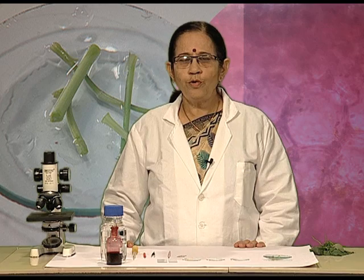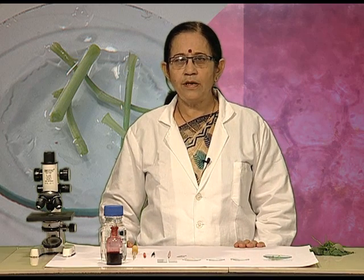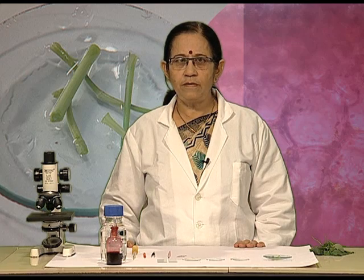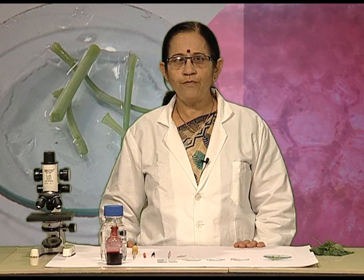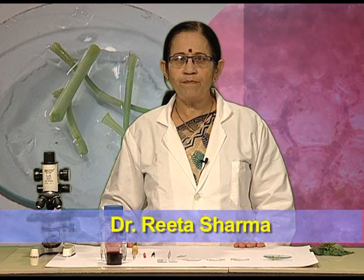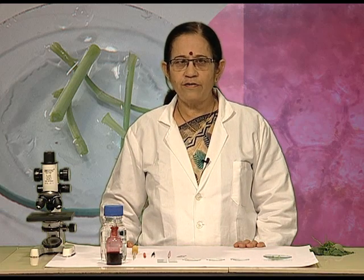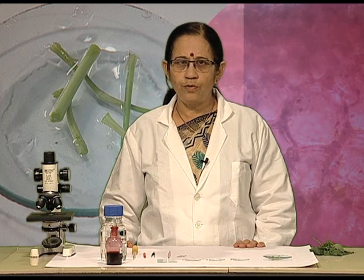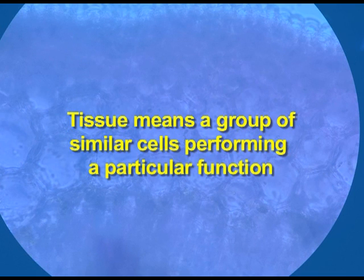Students, you have already observed plant cells in onion peels, where you found most of the cells were of uniform shape and structure. Today, we are going to talk about and study tissues. What is meant by tissues? Tissue means a group of similar cells performing a particular function.